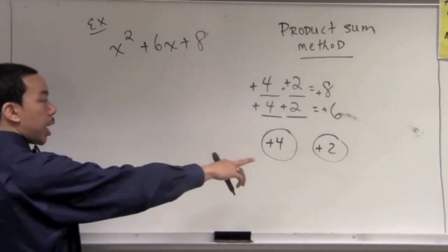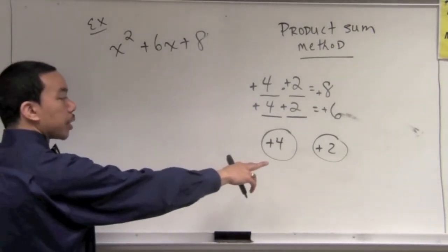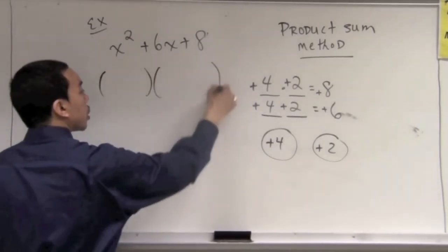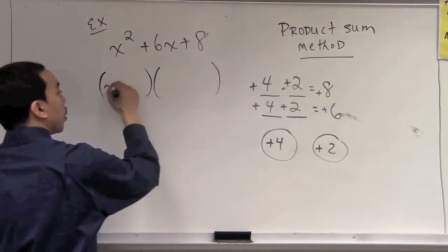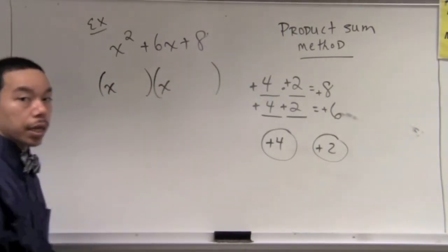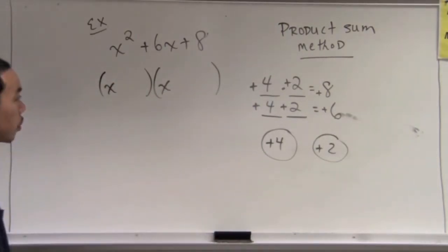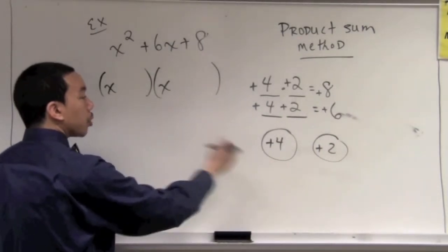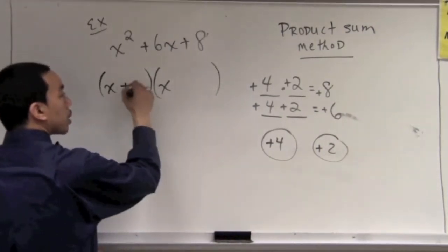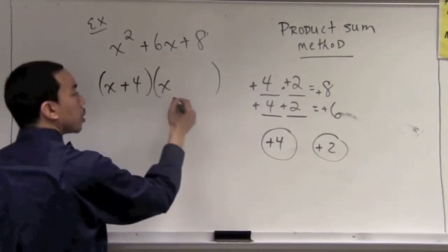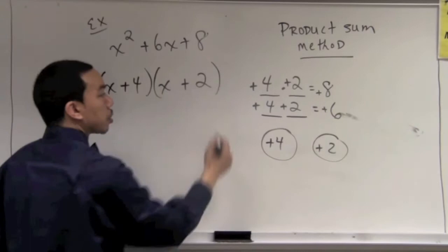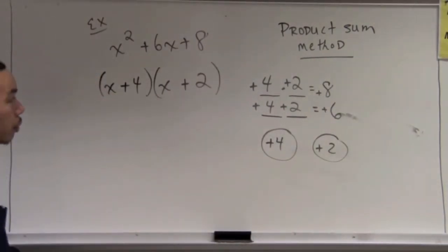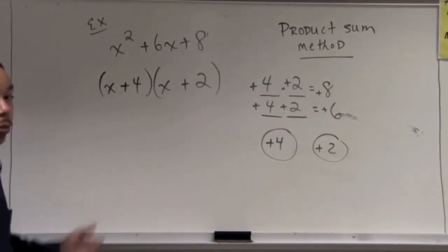The next step, after finding these numbers, is to form two sets of parentheses. We place an x in each set, then input what we just found — positive 4 in one set of parentheses and positive 2 in the other. And now this polynomial is factored.